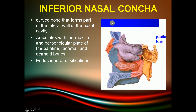The inferior nasal concha is a curved bone forming part of the lateral wall of the nasal cavity. It articulates with the maxilla, the perpendicular plate of the palatine, the lacrimal, and the ethmoid bone. It undergoes endochondral ossification.